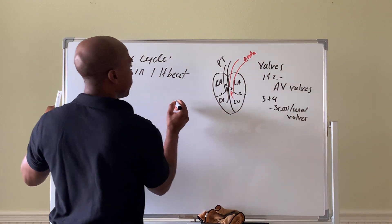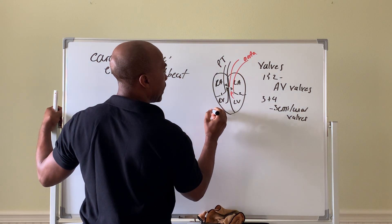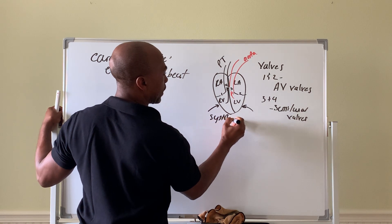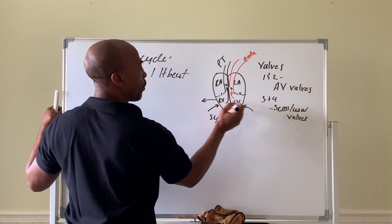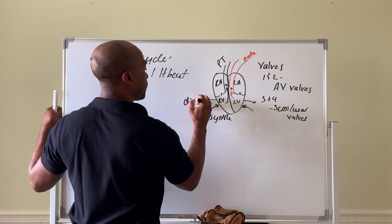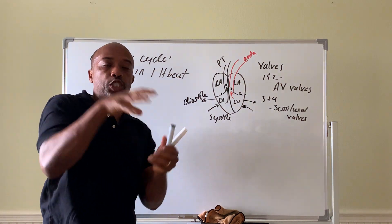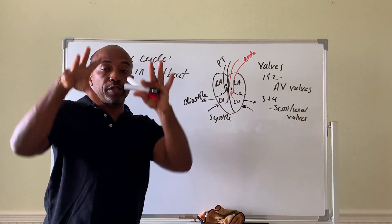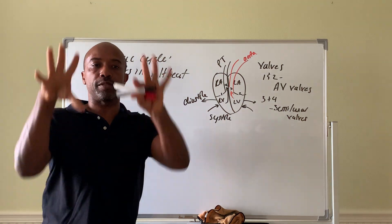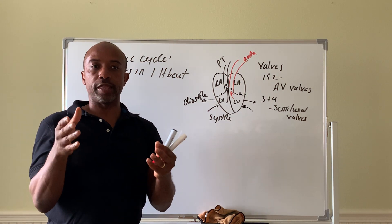The term systole refers to when the lower chambers contract — that's systole. And diastole is when they relax. We're always talking about the ventricle, not the atrium. When the heart beats, the upper chambers, the atria, contract first and they contract together — both sides — followed by both lower sides. So it's atria, then ventricles. It's not four different chambers doing their own thing; it's uppers, then lowers.